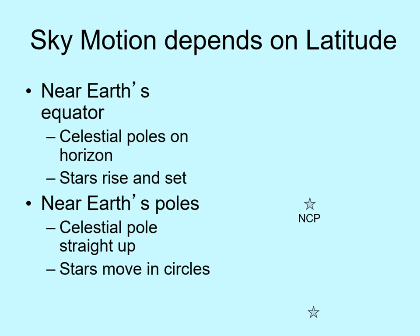We've seen that at the equator, the north celestial pole is right on the northern horizon, and at the north pole the celestial pole is right above our heads. Before going on, think about what will happen when you're standing somewhere between the north pole and the equator — for example, here in California. Where will the north celestial pole be in our sky, and what will that make the stars appear to do?